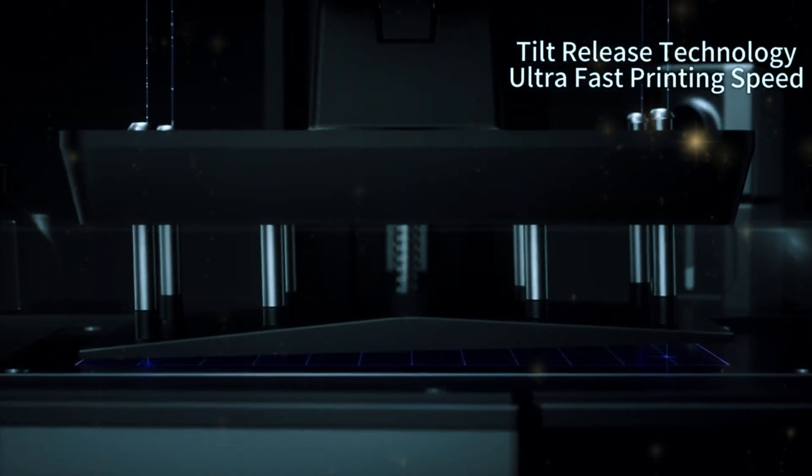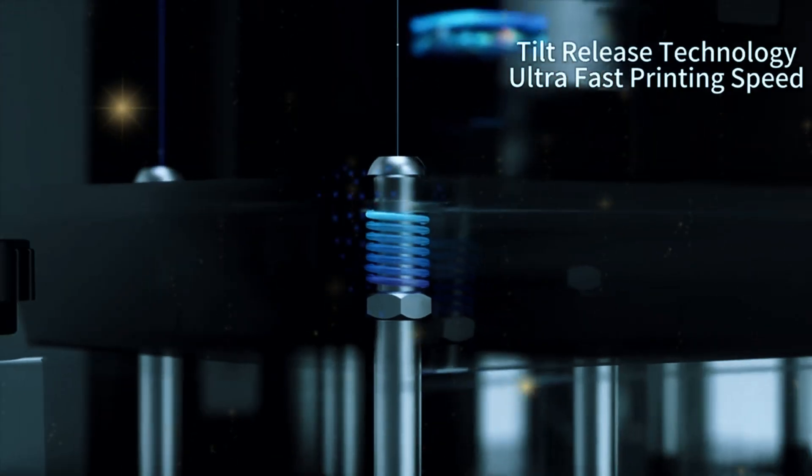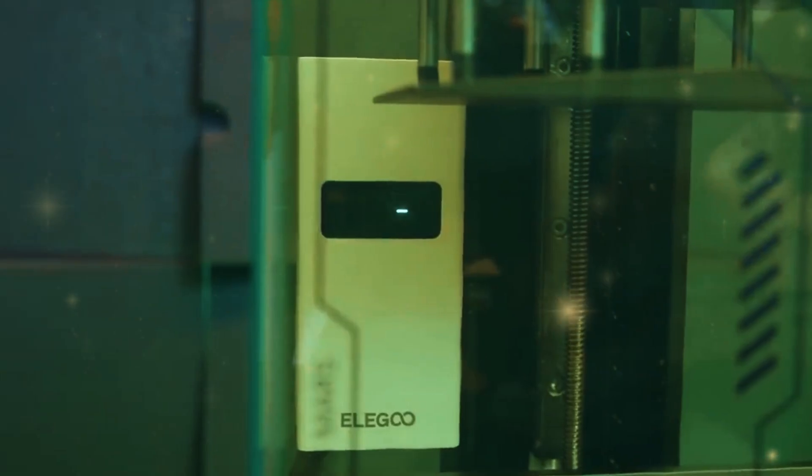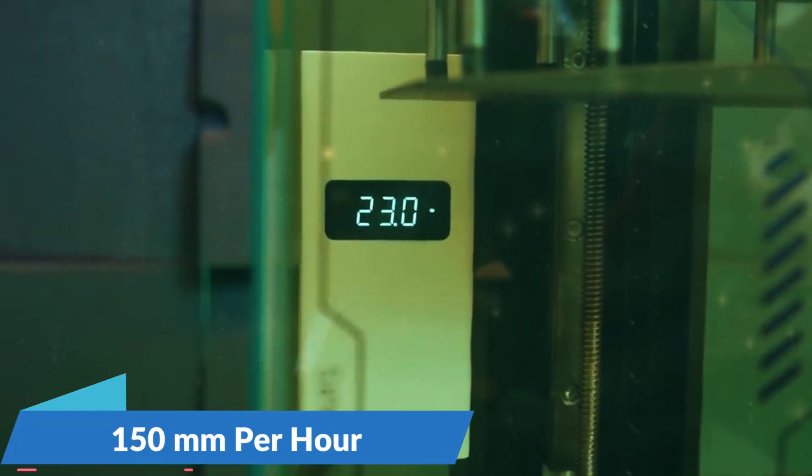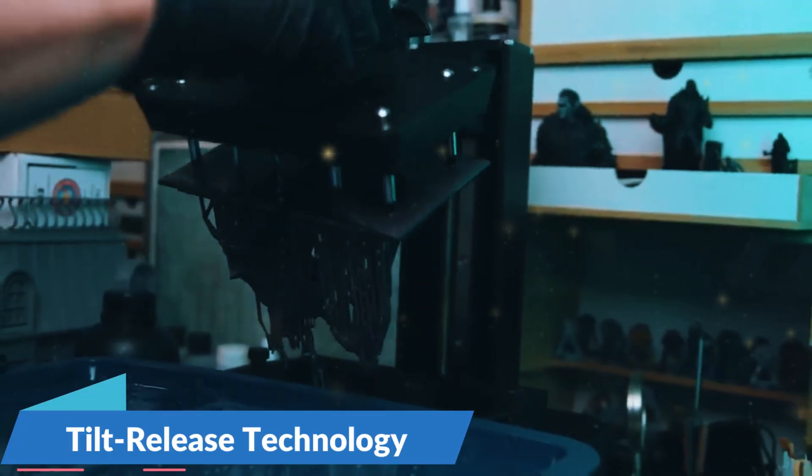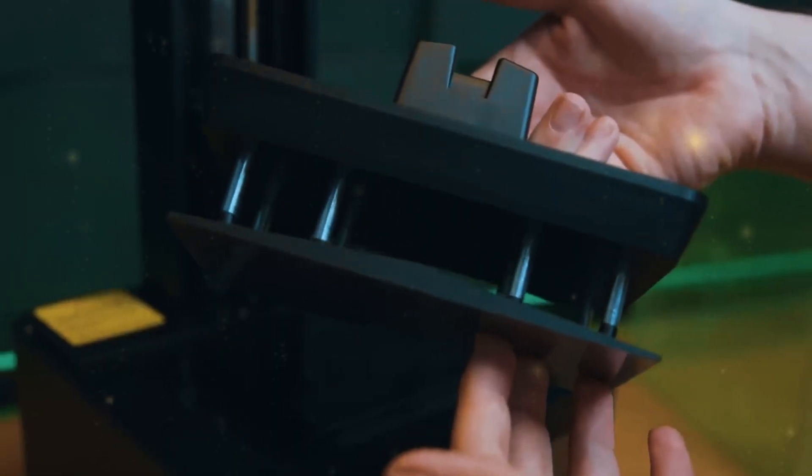Despite its focus on quality, the Mars 5 Ultra is no slouch when it comes to speed either. It can print up to 150 mm per hour, making it one of the faster resin printers available. Plus, it comes with tilt-release technology, which speeds up the process of peeling finished prints off the build plate.